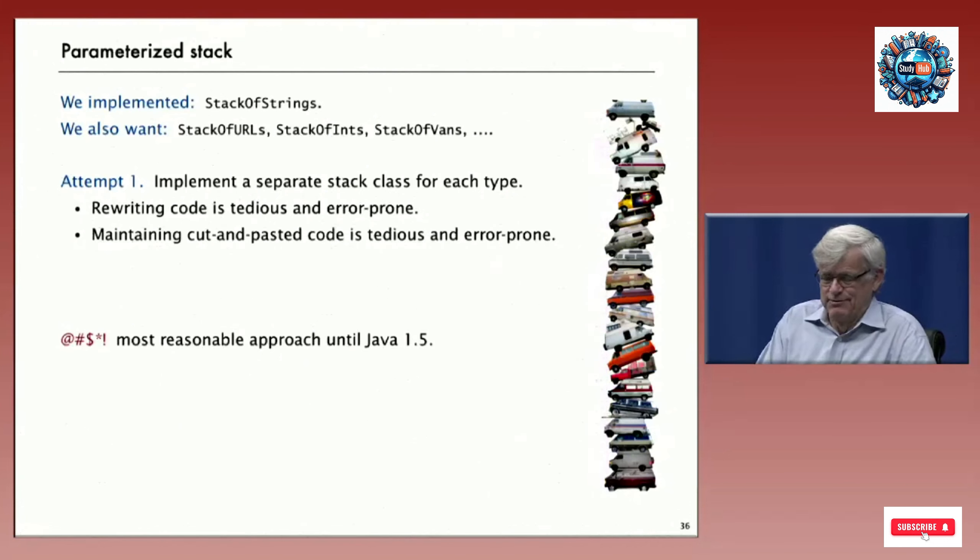We implemented stack of strings, but in applications we have all different types of data that we might want to implement, like a stack of ints, or URLs, or cars, or vans, or whatever data that we might be processing. So how are we going to implement stacks and queues for that type of data?